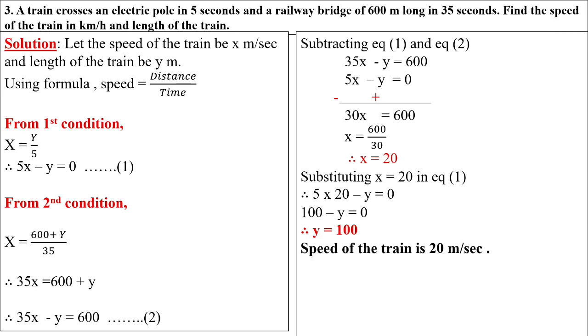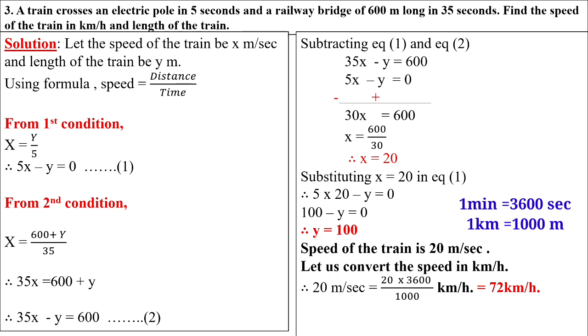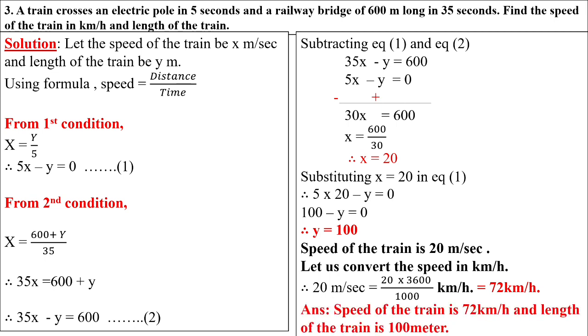Therefore, the speed of the train is 20 meters per second. Let us convert the speed to kilometers per hour. 20 meters per second equals 20 multiplied by 3600, because one hour has 3600 seconds, divided by 1000.